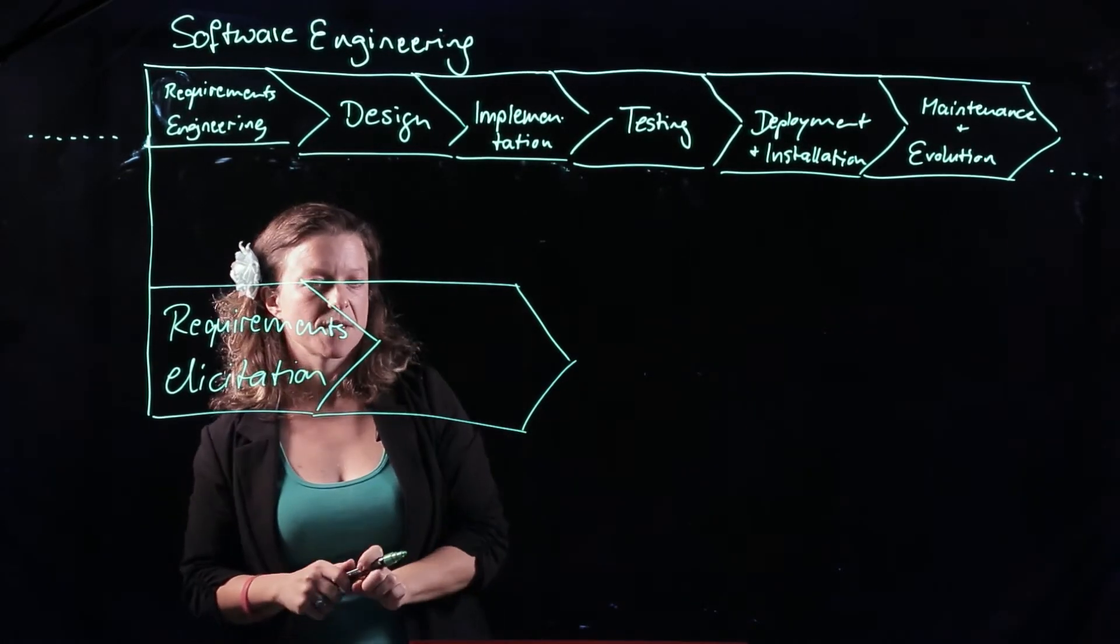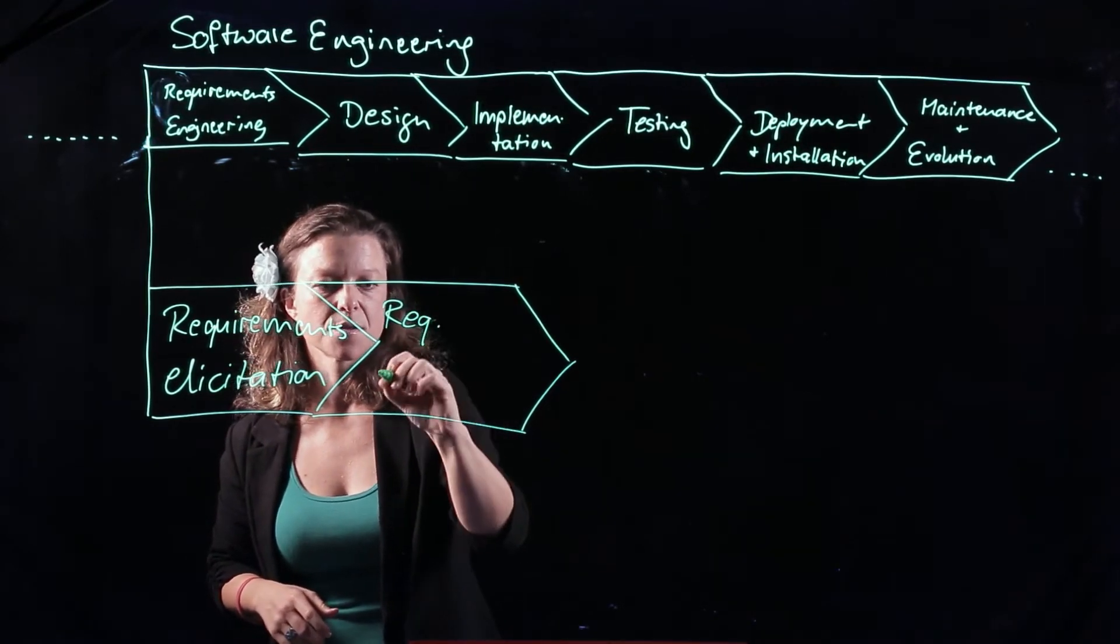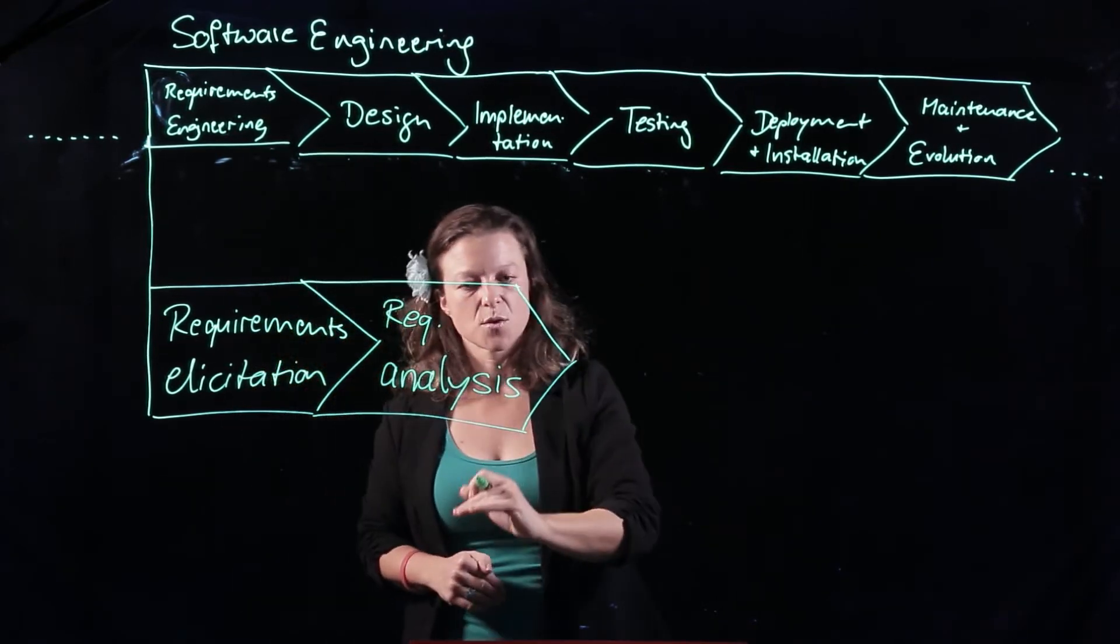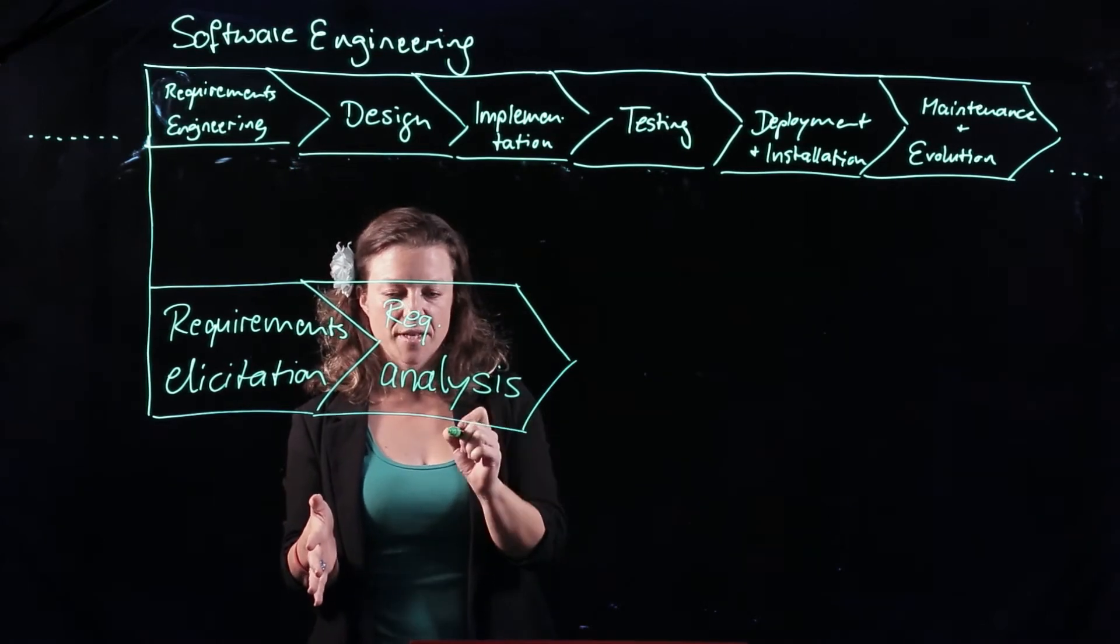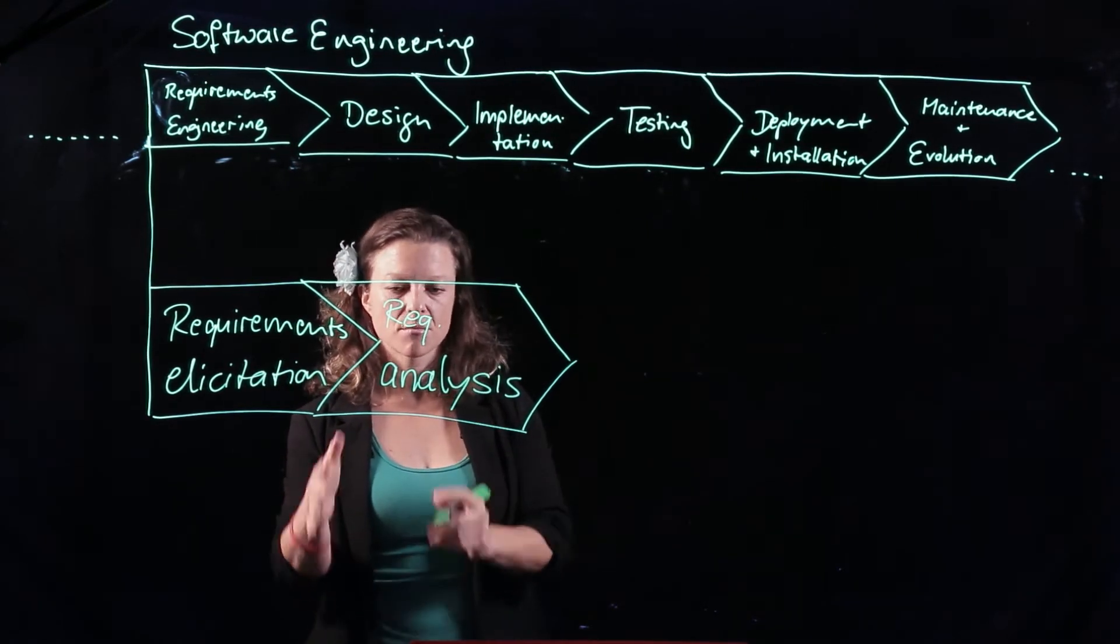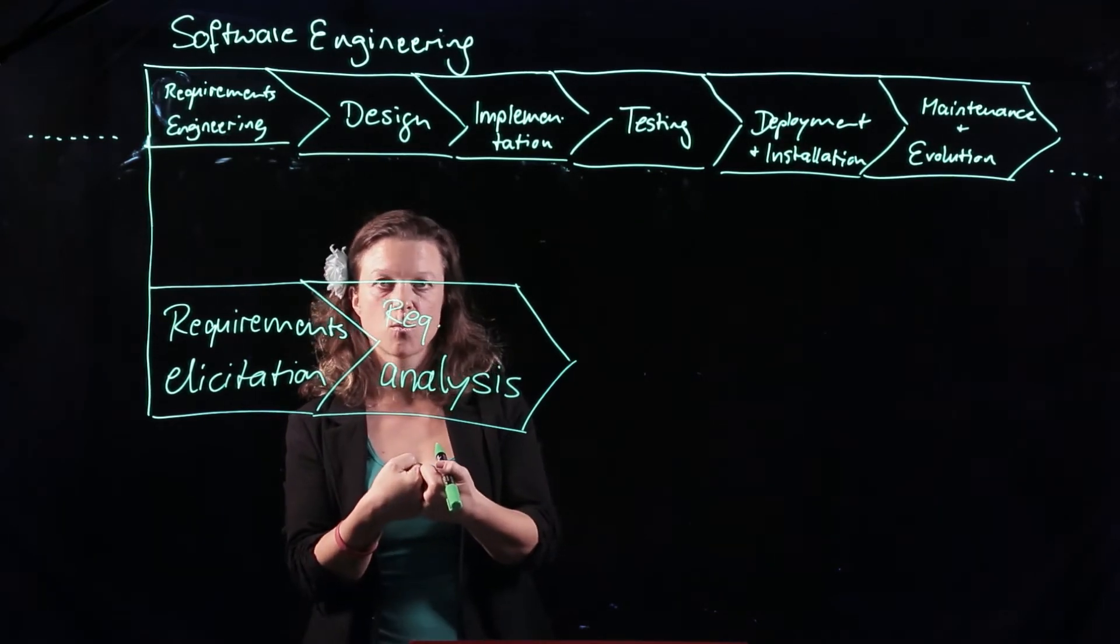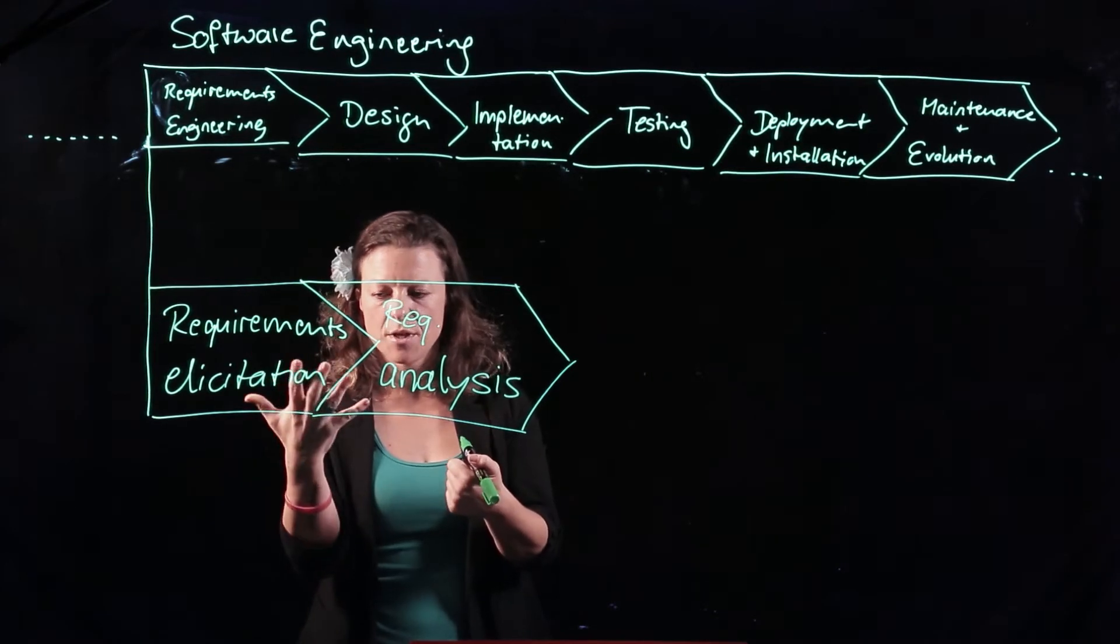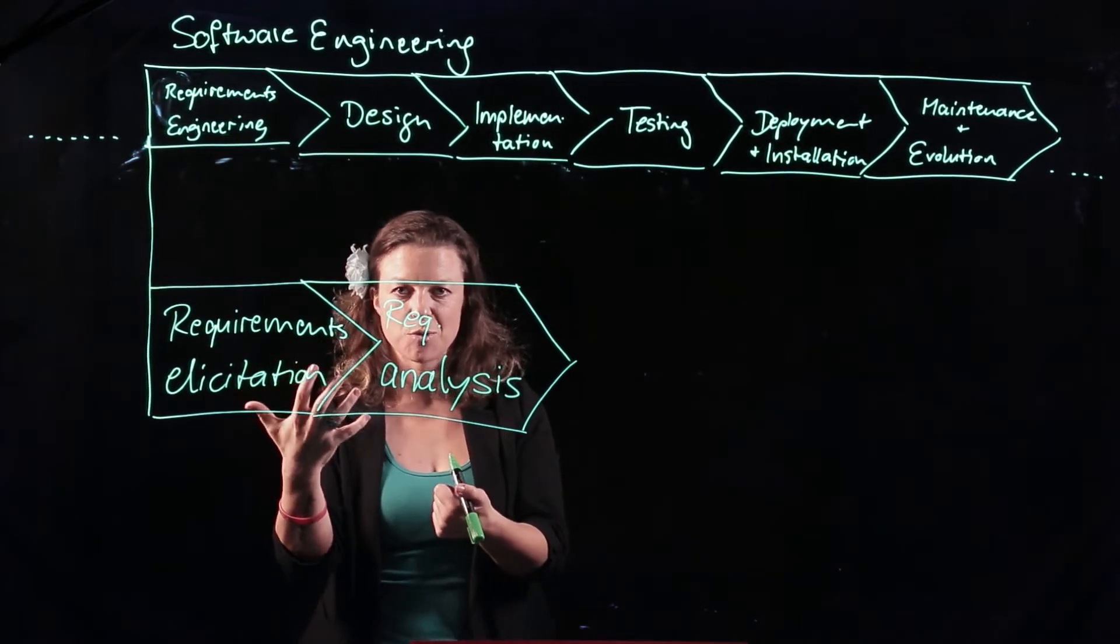So after requirements elicitation, what we do is requirements analysis. And requirements analysis is basically I look at the set of requirements that I have written down and I try to find out whether they fit together. Are they consistent with each other or are there any contradictions where one requirement says